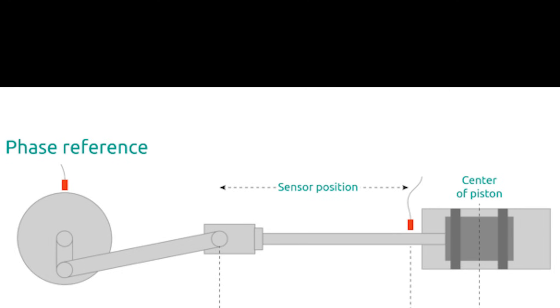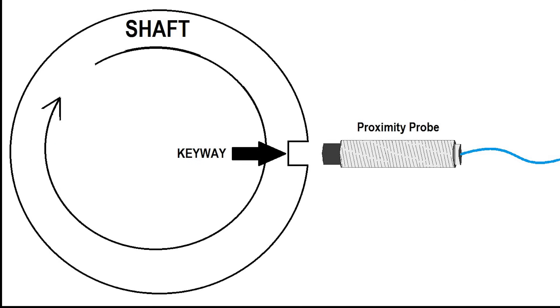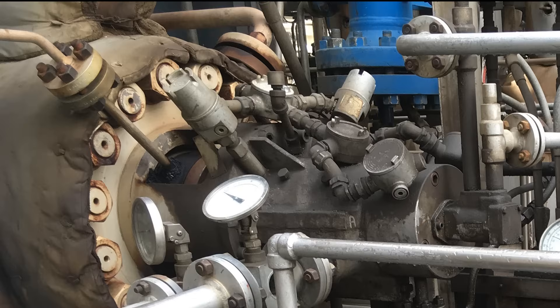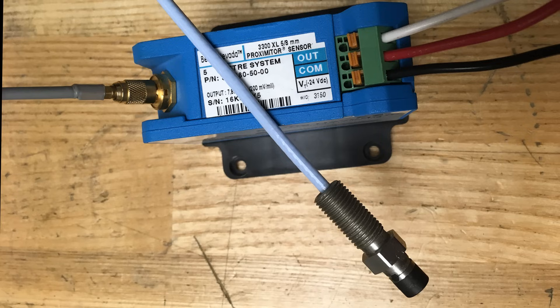Whether the proximity system is tracking rod drop, rotation speed, axial thrust, or vibration, the exact same field equipment is used. The only thing that changes is the manner in which the signal is interpreted.